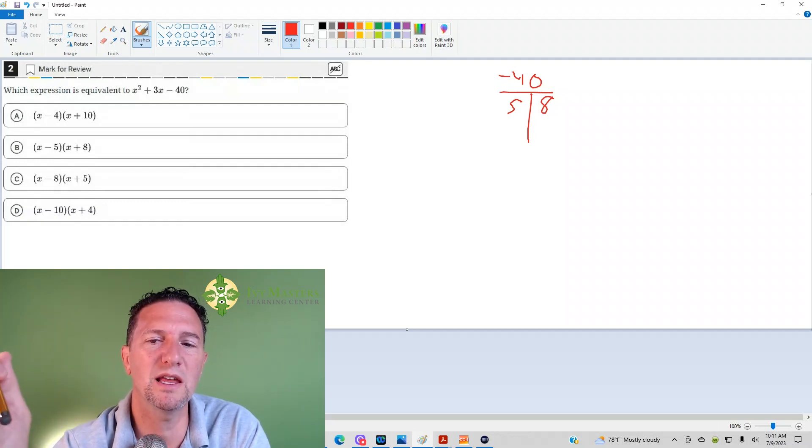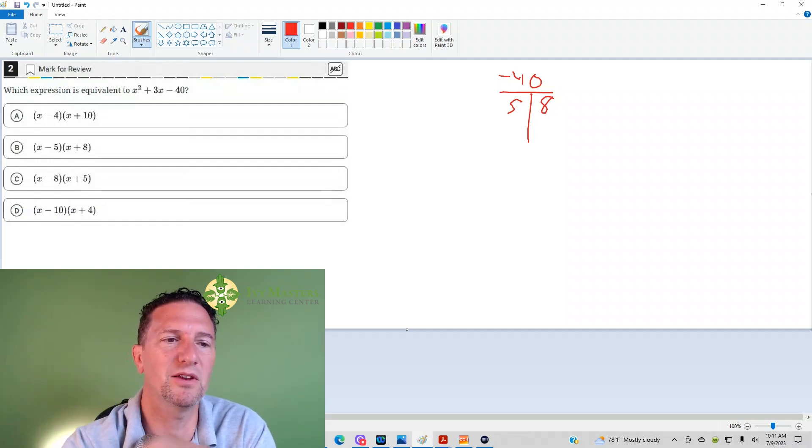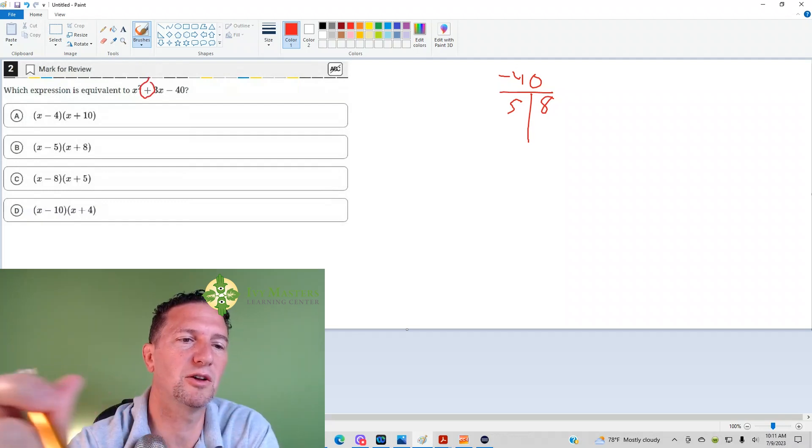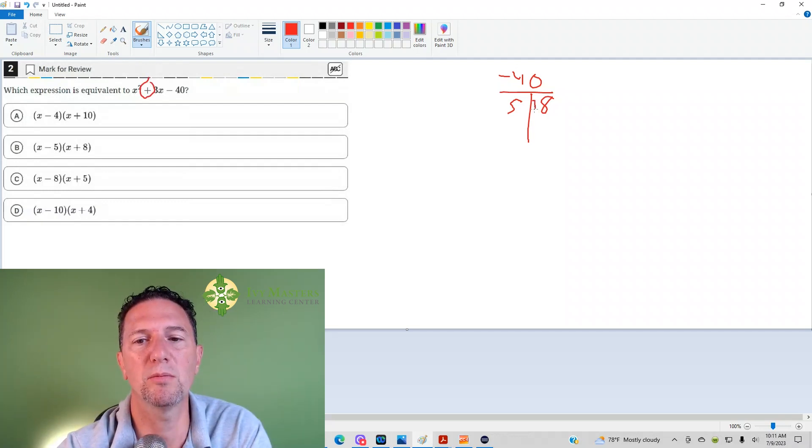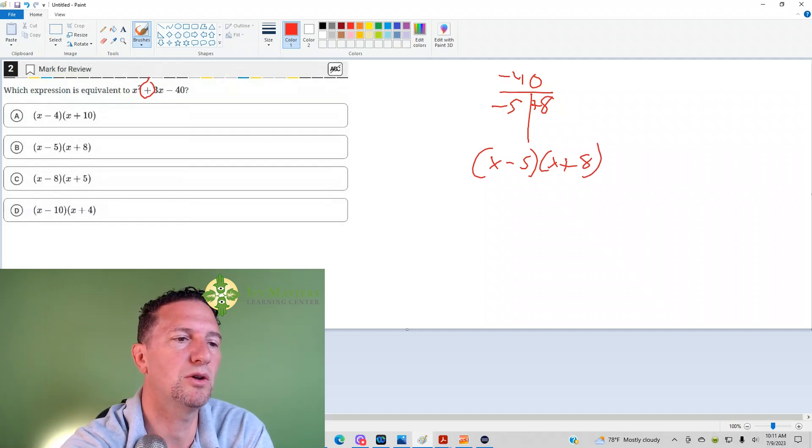And which one should I make negative? Because those two would multiply to give me a positive. If you look in the middle, if it's a plus 3, then the bigger number has to be positive. The smaller number has to be negative. So it would factor as x minus 5 times x plus 8. That's the easiest way to do it and the way that I recommend.